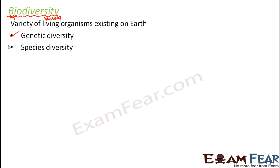The next level of biodiversity is species diversity, where two different organisms belong to two different varieties because they belong to two different species. As you know, there are several millions of different species which live on this earth. Species are a group of organisms which are capable of interbreeding amongst themselves — that is, they can mate with each other or reproduce amongst themselves. So that is another level of biodiversity.